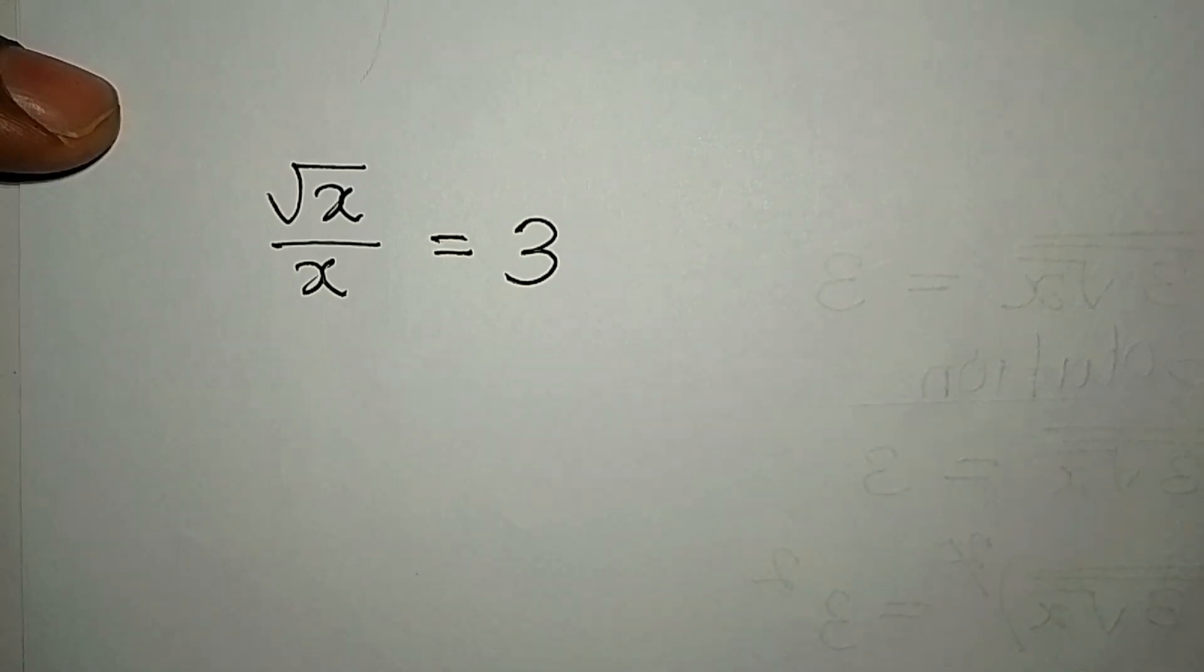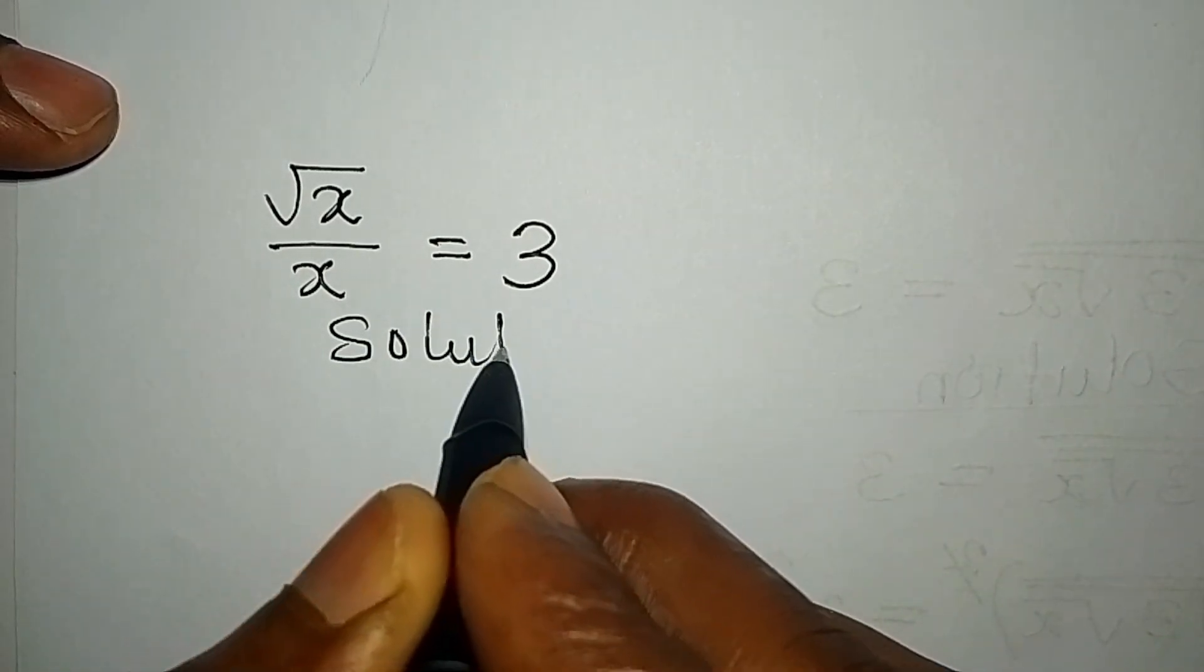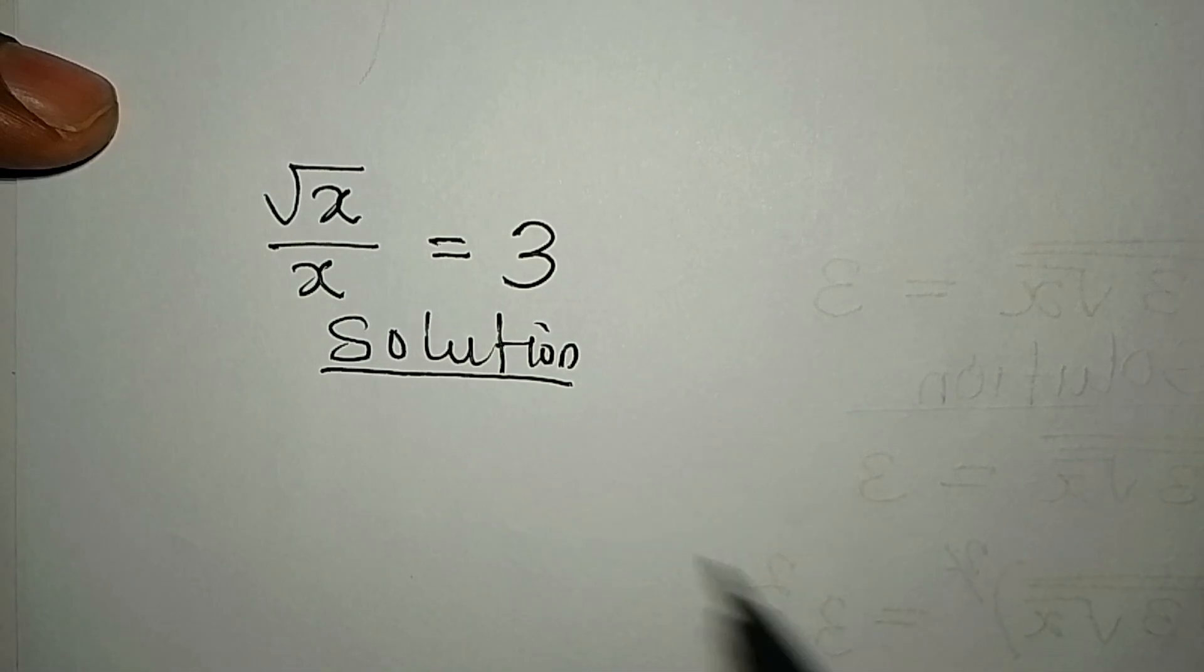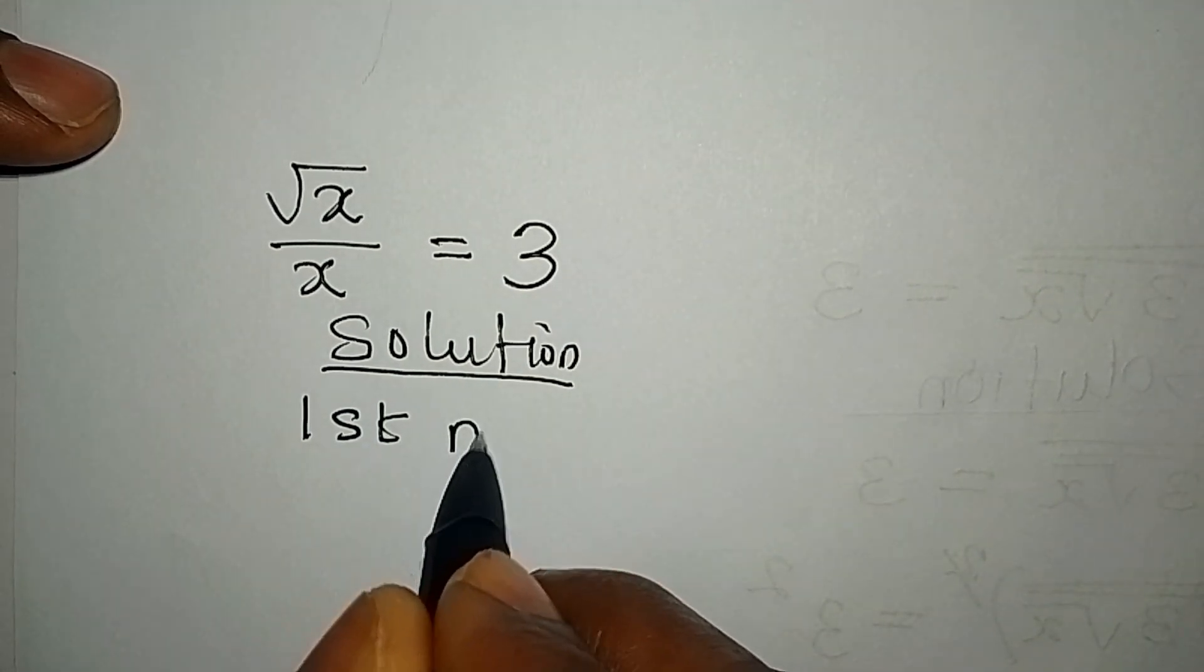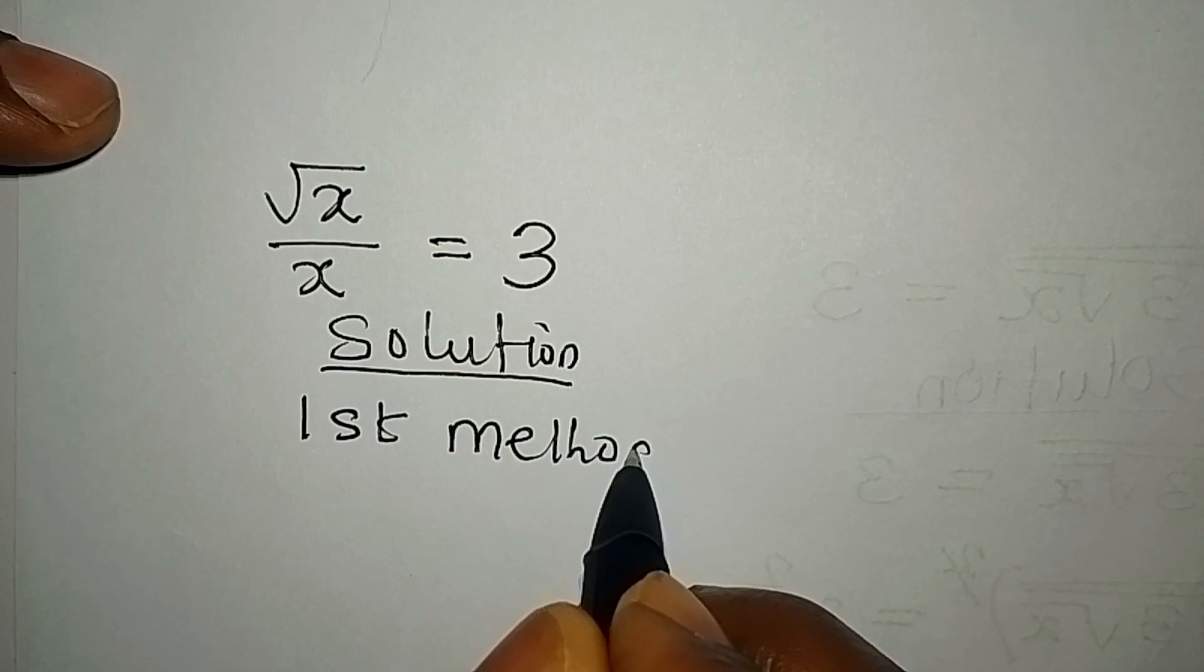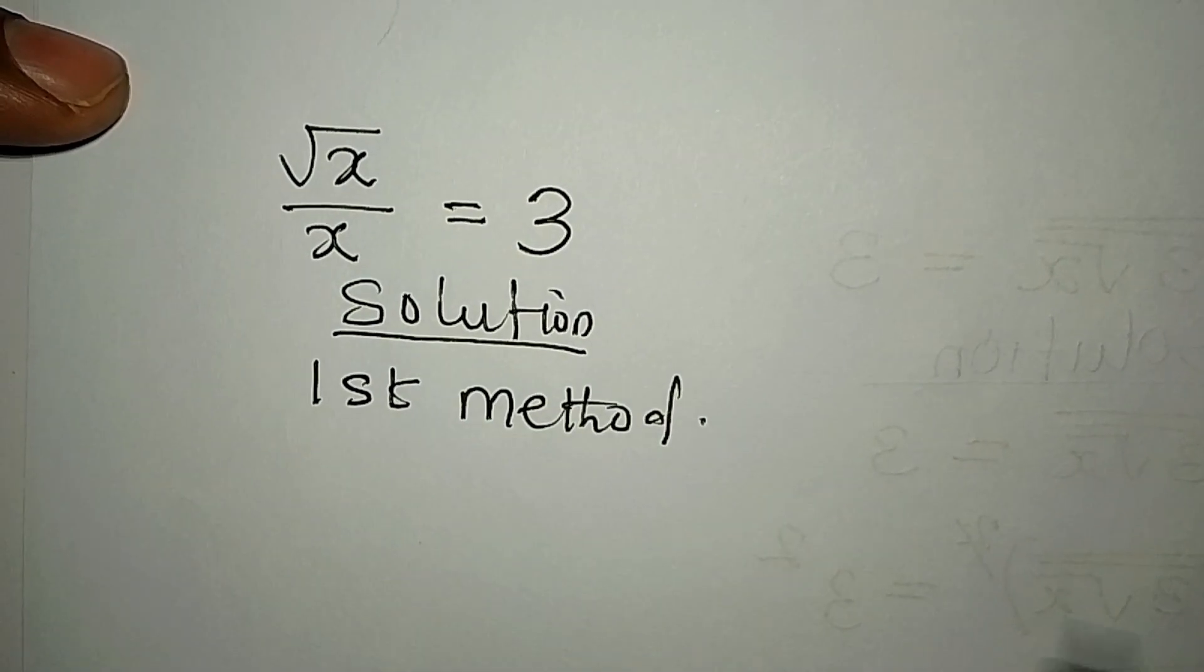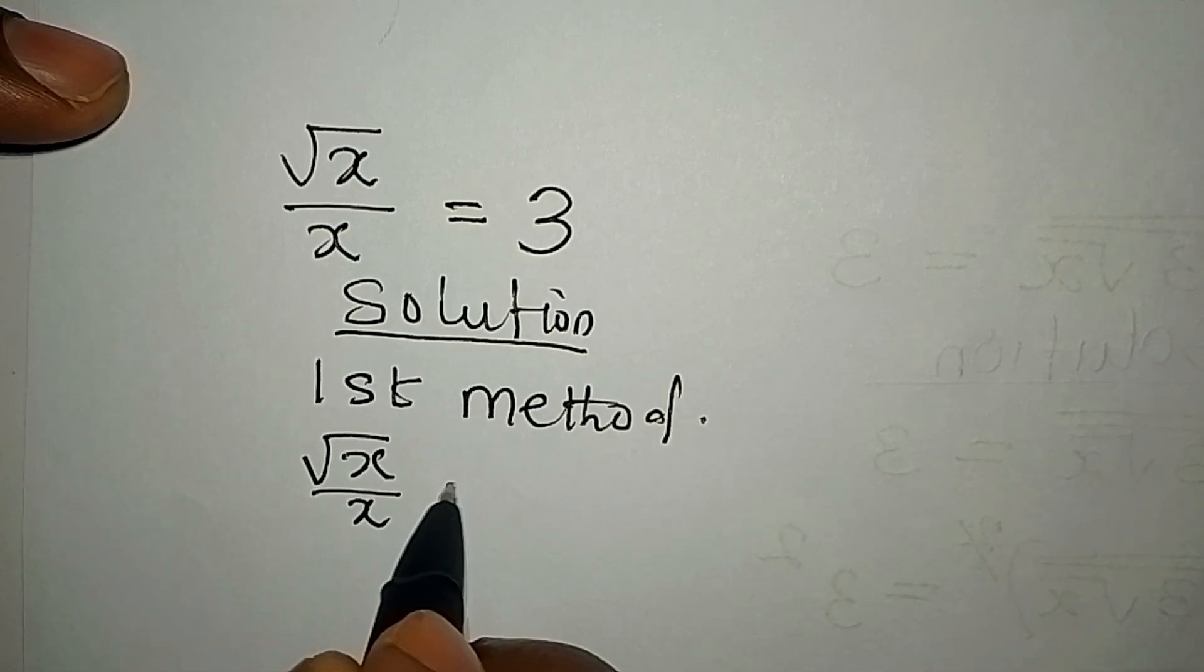Hello everyone, let's look at the two methods that we can use in solving this problem. Now the first method: we have square root of x over x that is equal to 3.